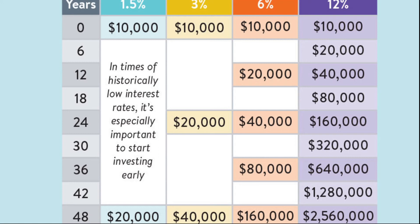The Rule of 72 primarily works with interest rates or rates of return in the range of 6 to 10%. If you're dealing with anything outside that range, you add or subtract 1 from 72 for every 3 percentage points the interest rate goes up or down from the 8% threshold. So if you have an 11% compounding interest rate — that's 3 points higher than 8% — you would use 73 instead of 72.